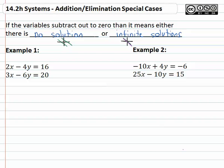So for example if we see 2x minus 4y equals 16 and 3x minus 6y equals 20, we might try and eliminate the x's. Going for 6, the least common multiple, we'll multiply the first equation by 3 on both sides. The second equation we'll multiply by negative 2 on both sides.